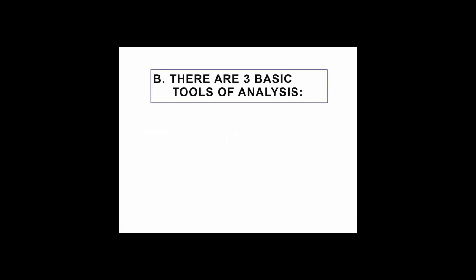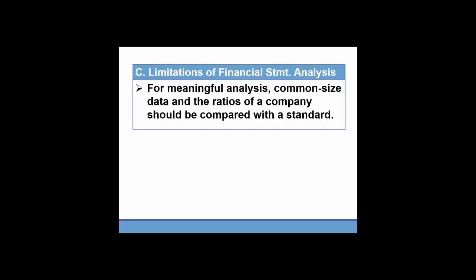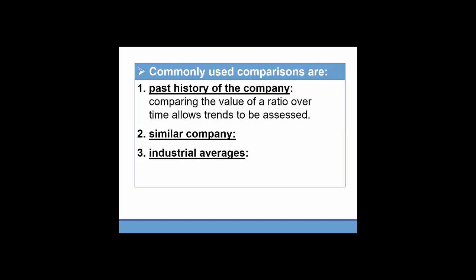There are three basic tools that we talk about in this course: horizontal analysis, vertical analysis, and ratio analysis. Any time you calculate the vertical, horizontal, or ratio analysis, it's important to note that for it to be meaningful, you need to make comparisons with something. That standard could be the past history of the company.